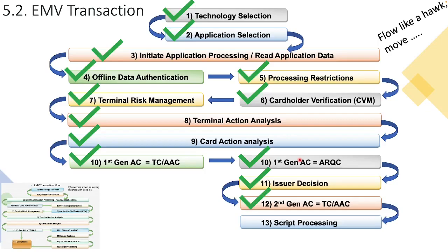The card takes that recommendation into account but also does its own processing. It performs ARPC validation and then comes to a final decision. In this case, the issuer host asked for approval, the terminal submitted the request for approval, and the card responded with a TC indicating the transaction is approved. Before finalizing, we now go into a Script Processing phase. If the issuer sent down any issuer scripts on that ISO 8583 response message, the card applies those scripts to itself at this point. These scripts are used to make changes to the on-card parameters.